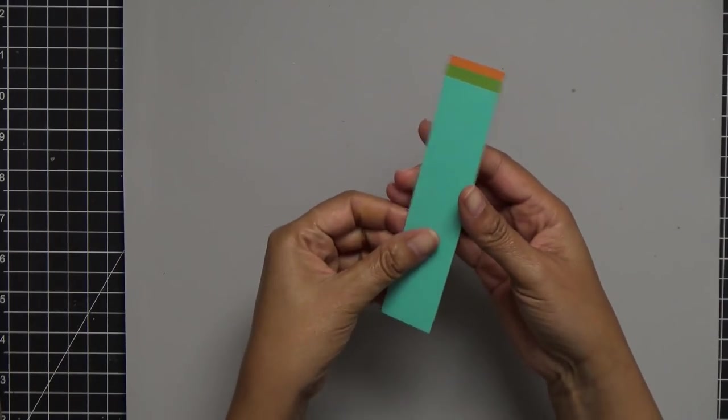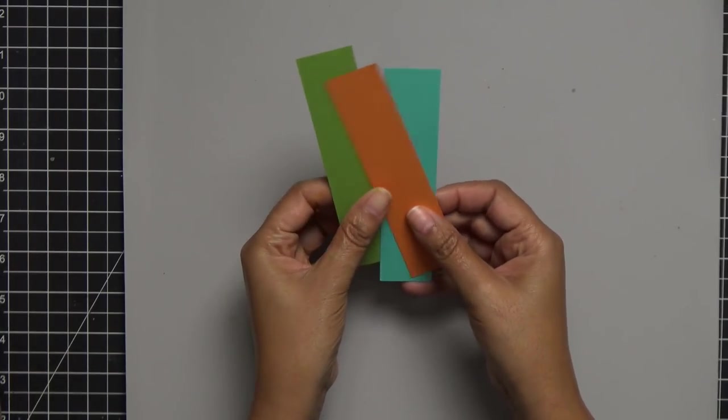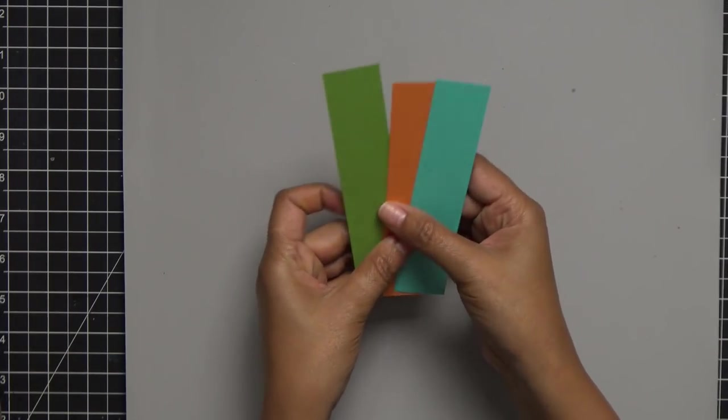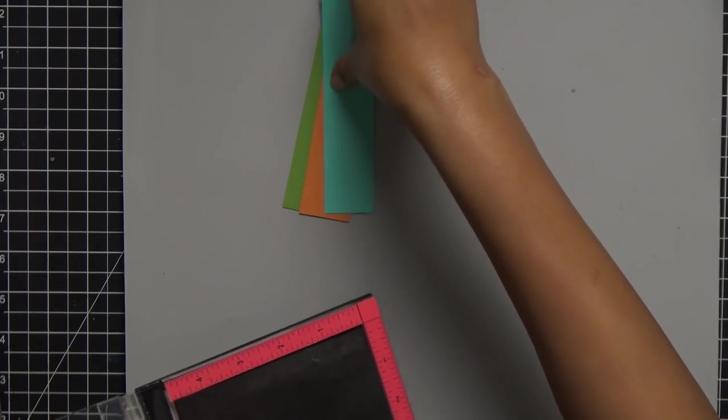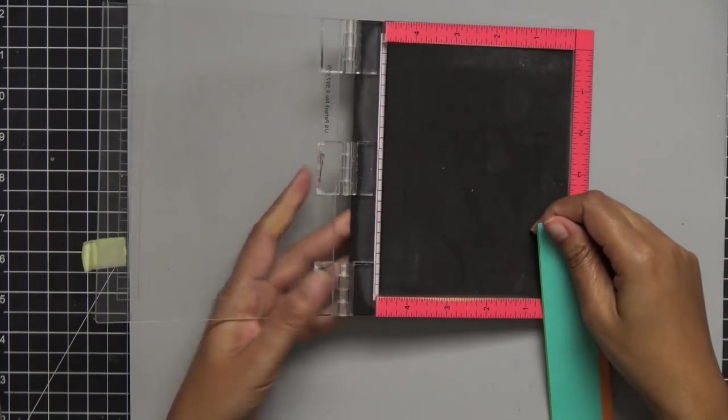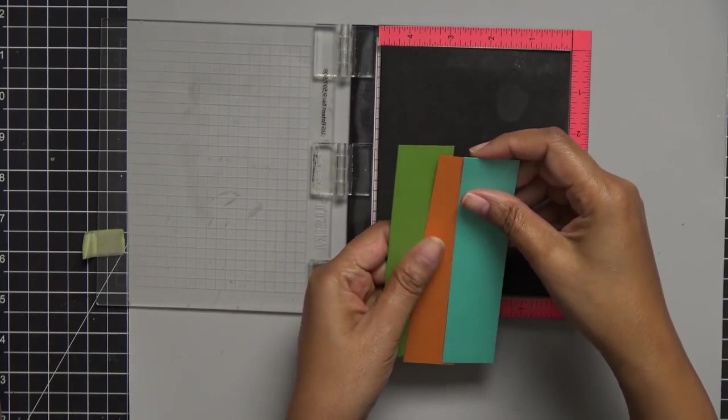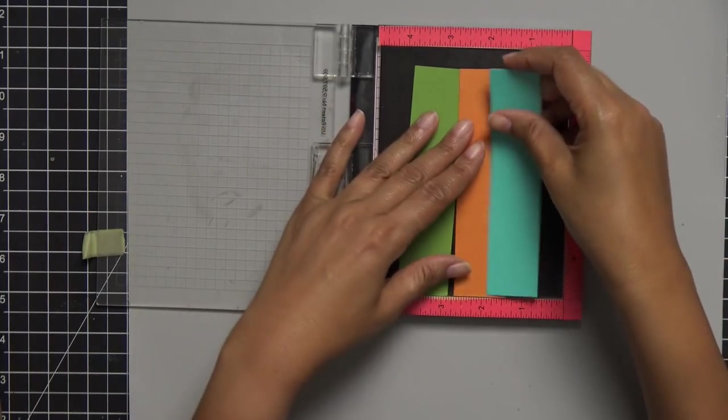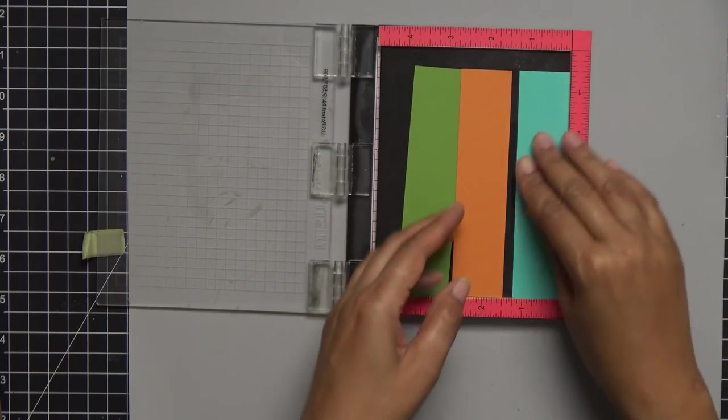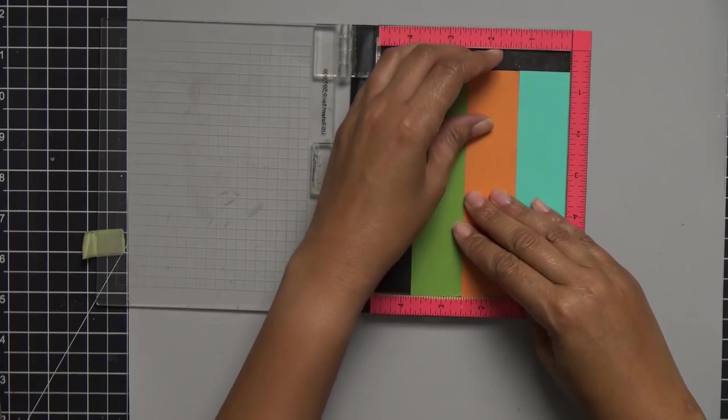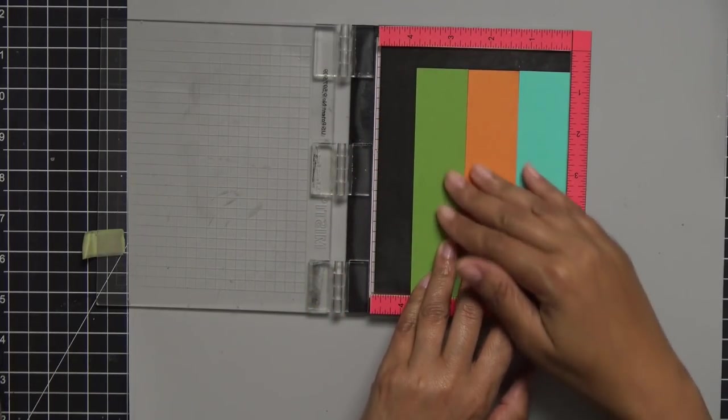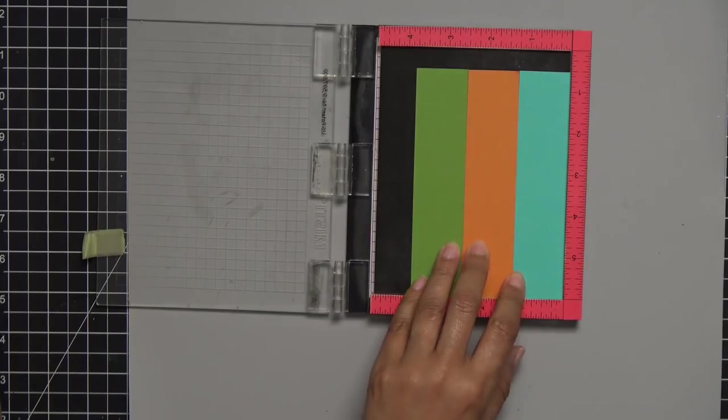Now that I have everything cut out, I just need to bring in my craft mat. Here are the three strips I've already pre-cut. To line these up, I'm going to grab my mini MISTI. A lot of the times we use our MISTI for stamping, but it also helps you line paper up, especially if you have little strips like this. It helps you line them up evenly so they stick together perfectly.